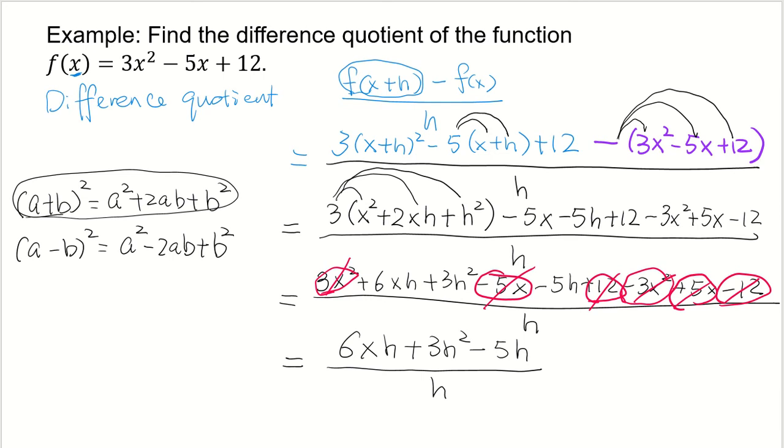So each term will be divided by h. We have 6x plus 3h minus 5. And that is the difference quotient for this function f.